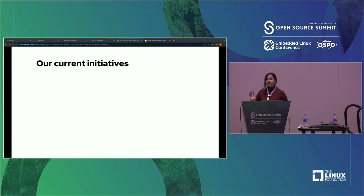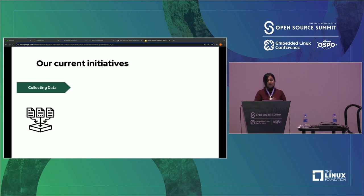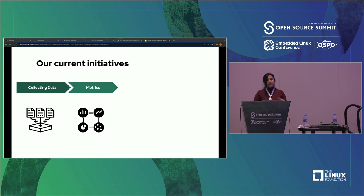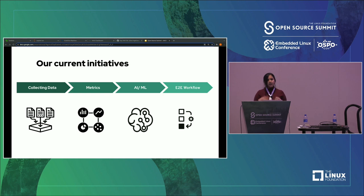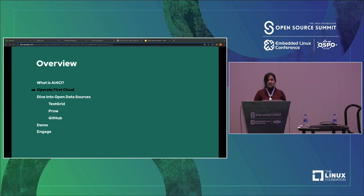Let's look into some of our current initiatives. We are heavily involved in collecting data from different open data platforms and creating a community around open CI CD data sources. We are also involved in quantifying and evaluating the current state of a CI workflow using key performance indicators. We are building AI and ML techniques to improve the CI workflow. And most importantly, we are interested in creating a reproducible end-to-end workflow around data collection, analysis, and modeling efforts using multiple technologies like Elyra, Kubeflow Pipeline, Selden, and JupyterHub — all of which is developed, built, and operated on the OperateFirst environment.